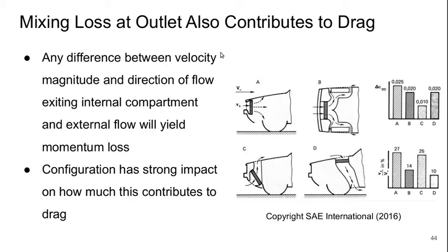Basically any difference between the velocity, magnitude and direction when the flow exits the internal compartment and the external flow is going to yield some kind of momentum loss. And the exact way you do that, where you have that exit flow come out has a big impact on how much this contributes to the overall drag. And we can see four different designs here.